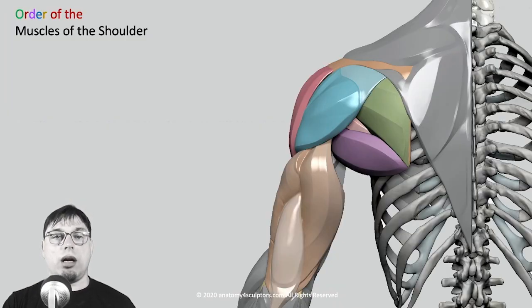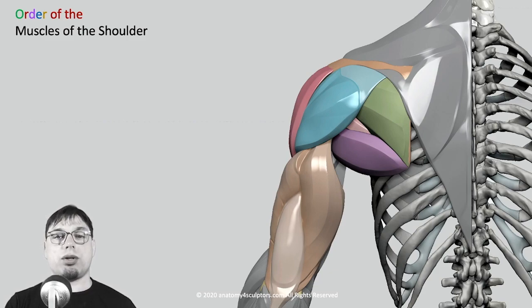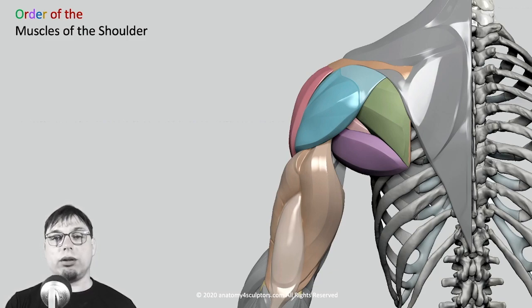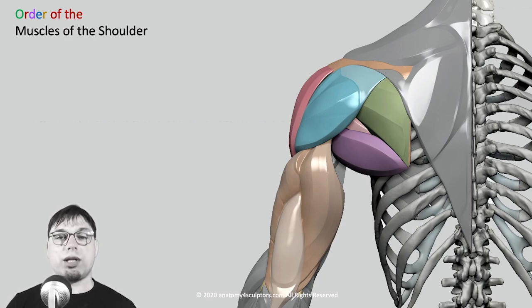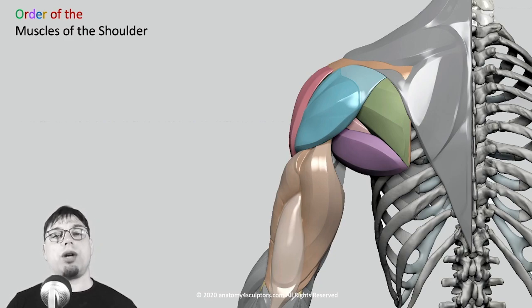You can see the insertion of the pectoralis major muscle. From the back side, the situation is similar — the deltoid covers all the muscles of the scapula and also the triceps muscle.